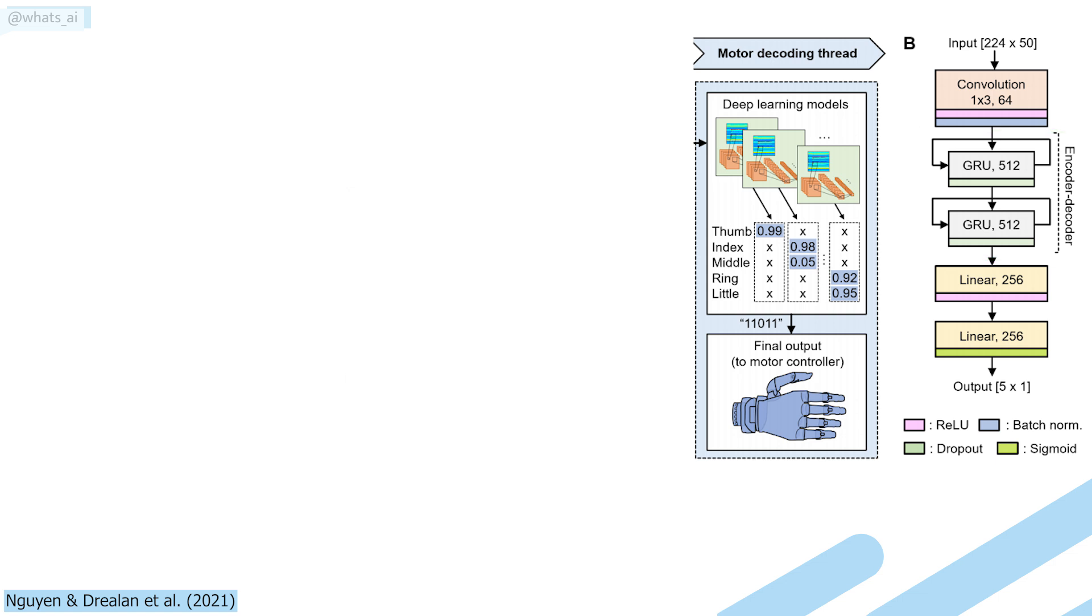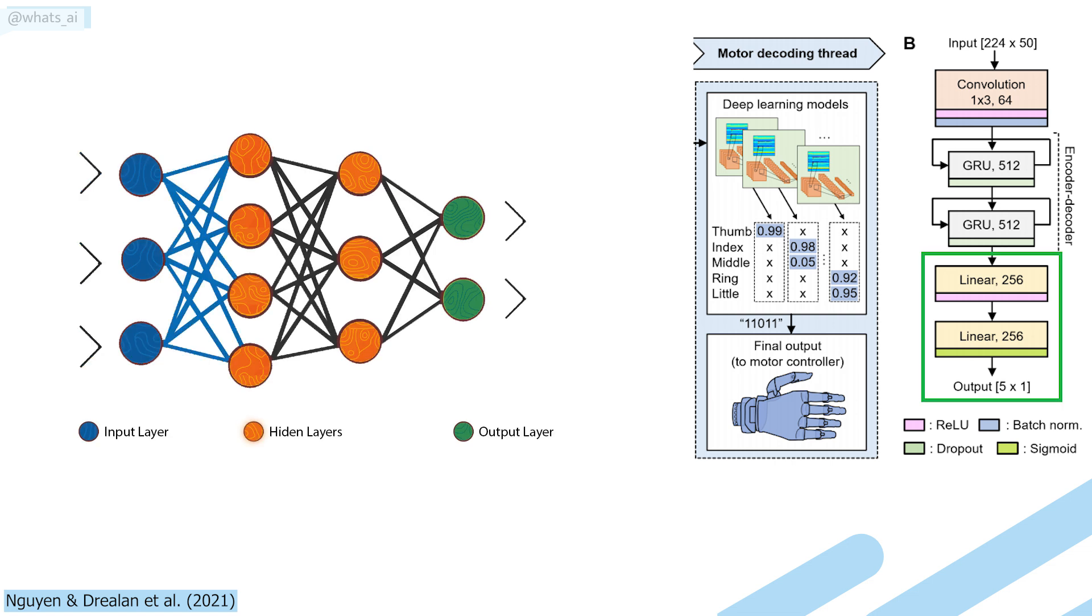Finally, this decoded information is sent to linear layers, basically just propagating the information and condensing it into probabilities for each individual finger.